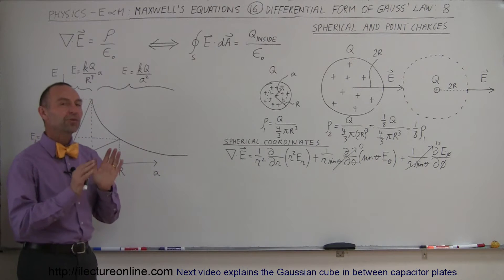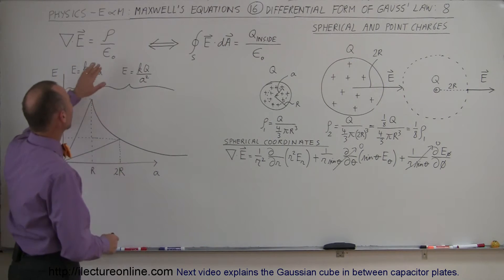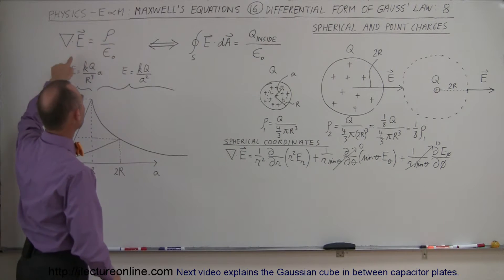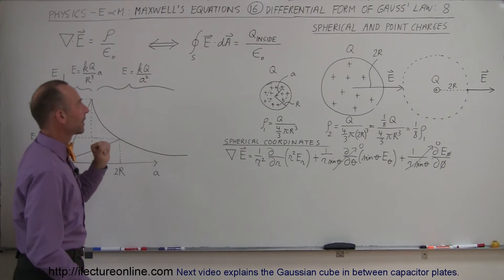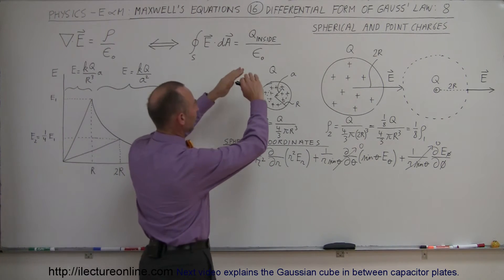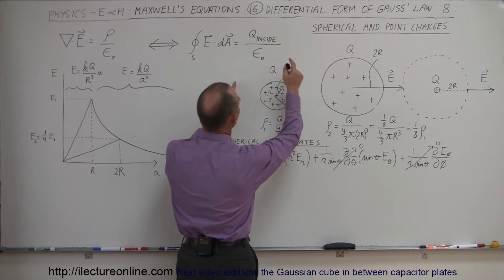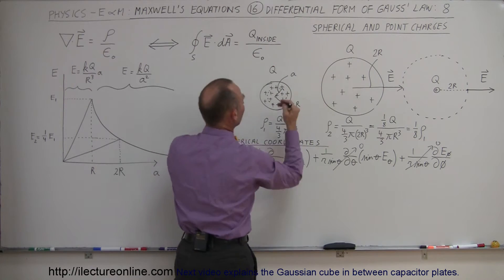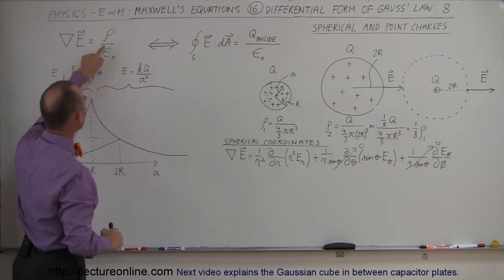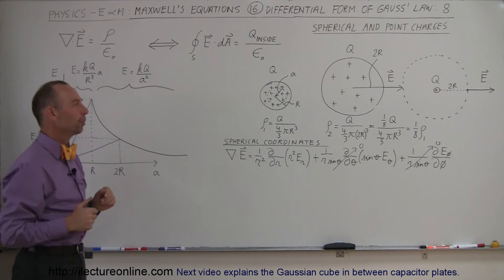Here we're going to do some examples that will simplify and hopefully help you understand the meaning of the charge density in the differential form of Gauss's law. In the integral form we just set up a Gaussian surface and worry about how much charge is inside. But in the differential form, we talk about the charge density. So let's explore that.